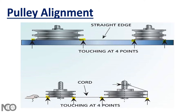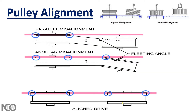However, a disadvantage of this method is that you cannot easily differentiate between offset and horizontal angle misalignment when only three points are touching. For example, you cannot detect if you have angular misalignment or offset misalignment. Another disadvantage is that this method requires more labor and more time to check misalignment, whether using a straight edge or a string.